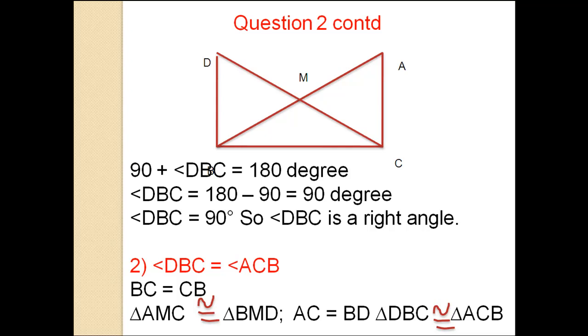From triangle AMC congruent to triangle BMD, AC equals BD by CPCT. Therefore triangle DBC is congruent to triangle ACB.